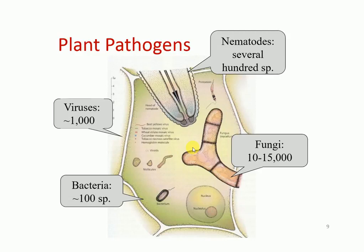The second basis is knowledge of host-pathogen interaction, and the third is knowledge of environmental effects. For example, apple scab outbreaks can be predicted based on temperature and moisture conditions. Fruit cracking appears due to boron deficiency and high moisture conditions — if moisture content is high, fruit cracking mostly appears on the fruit.